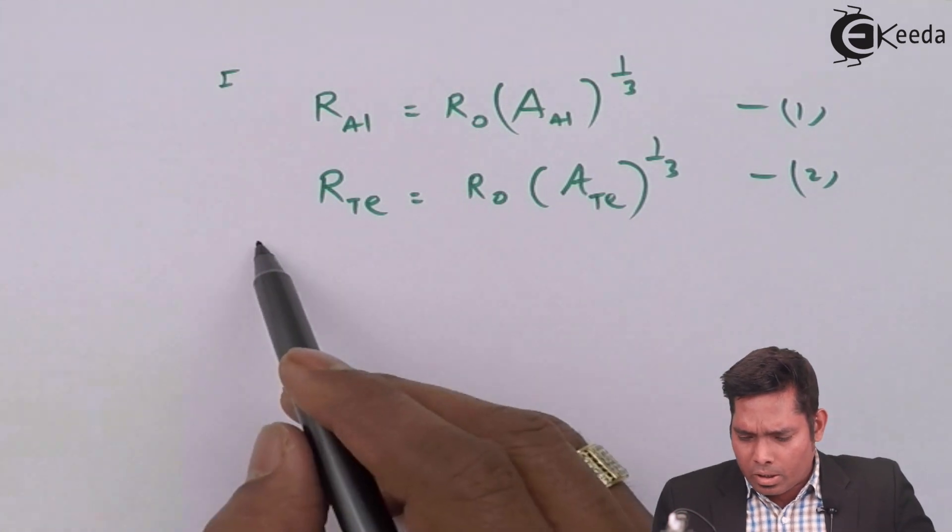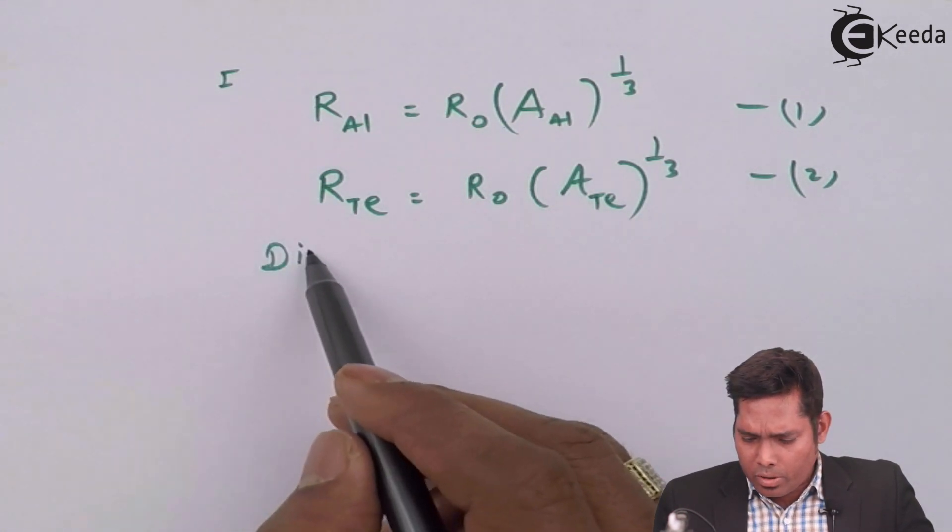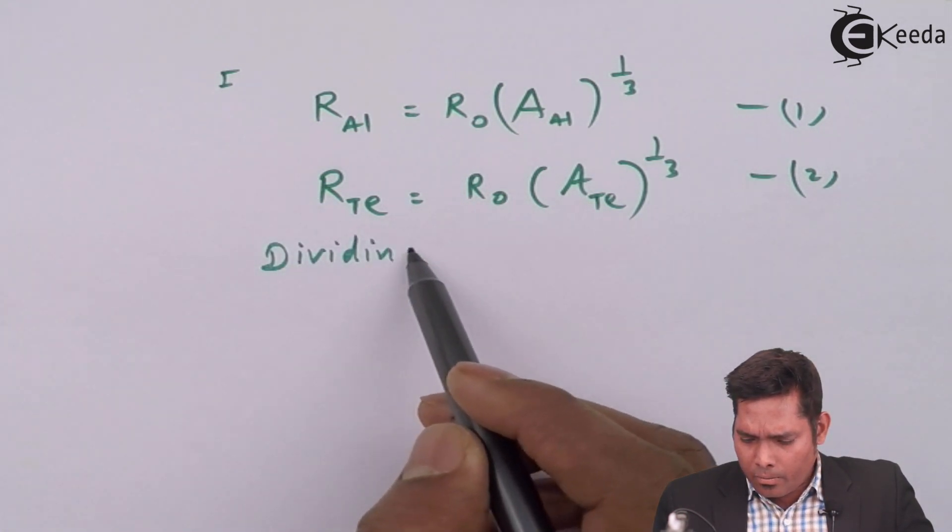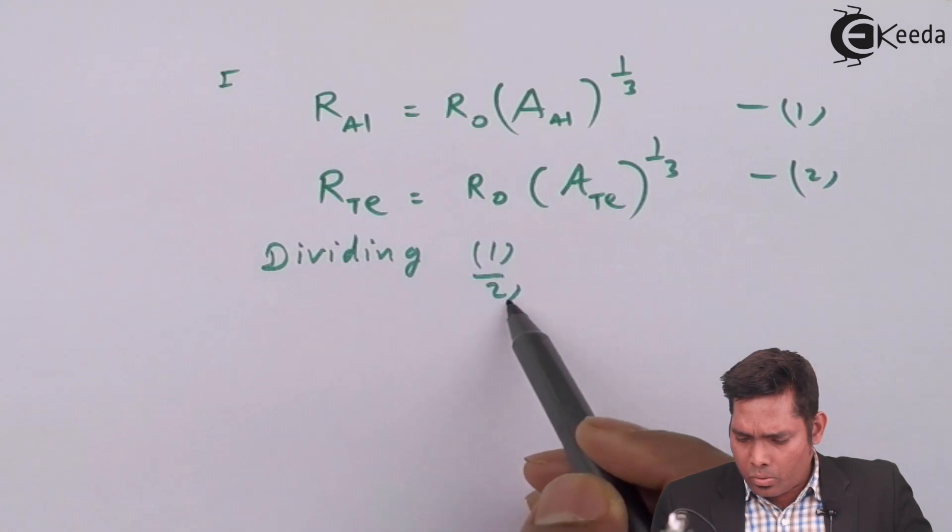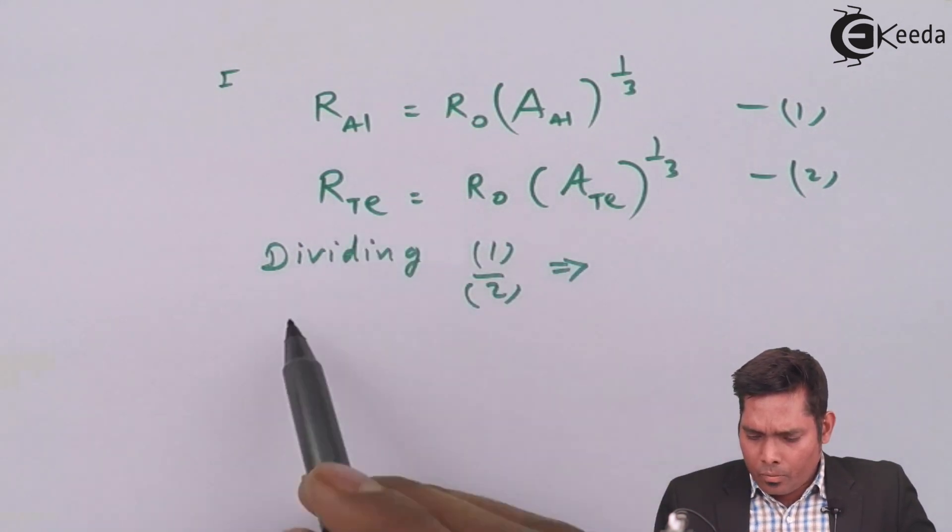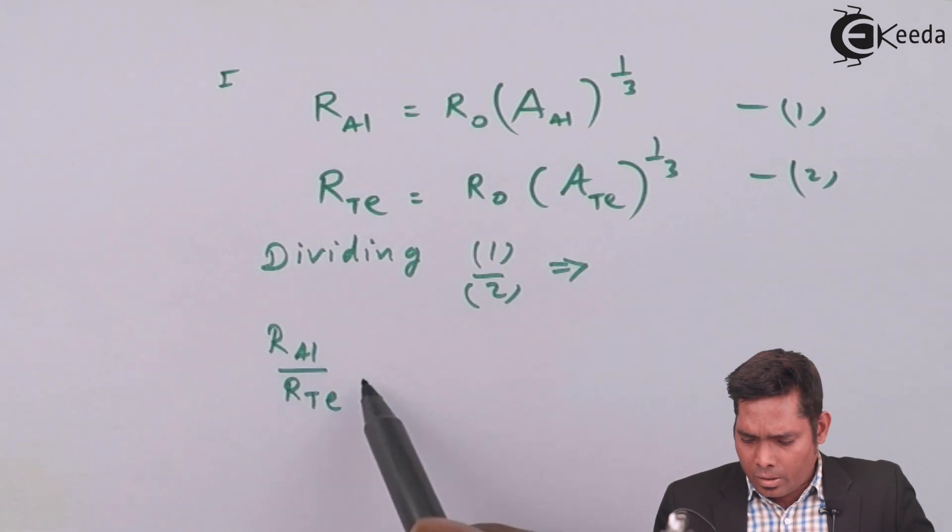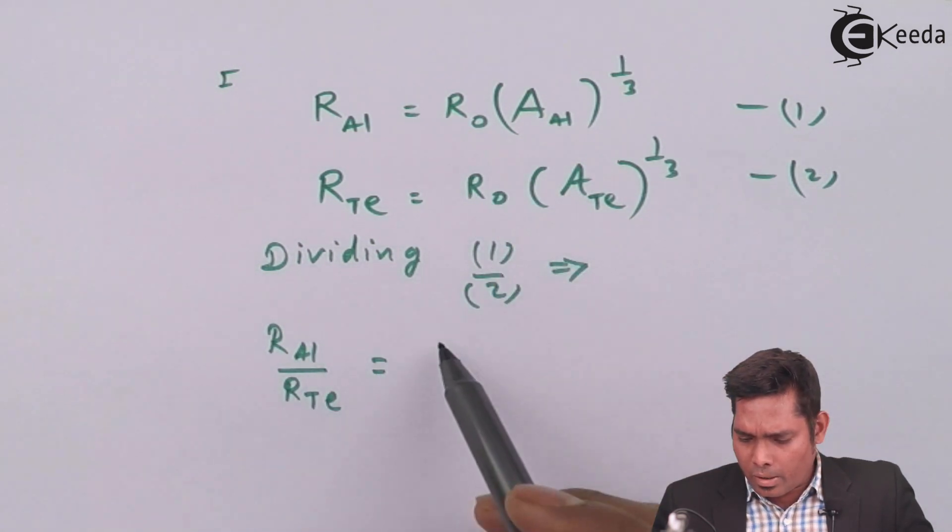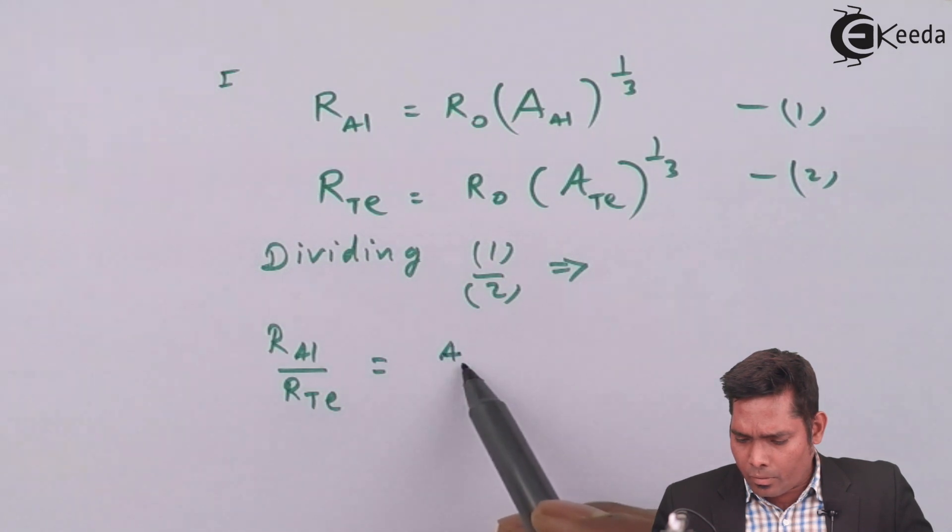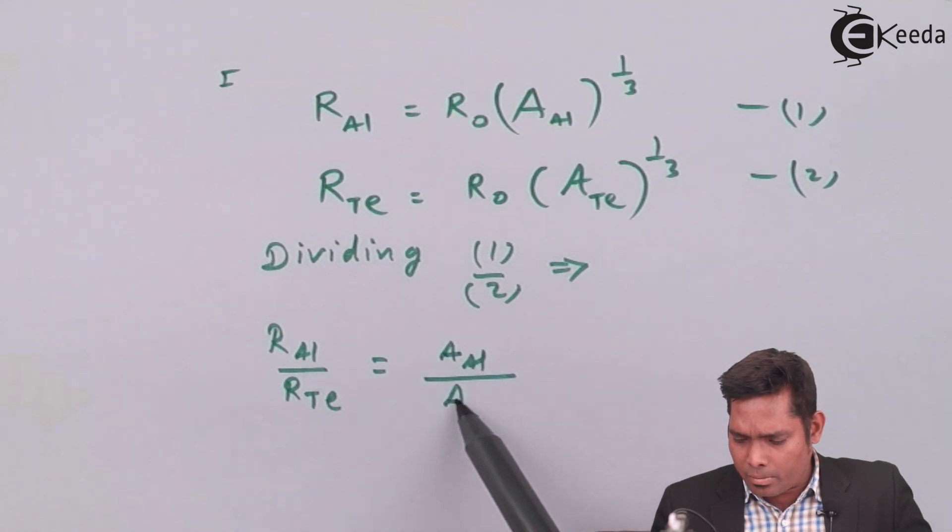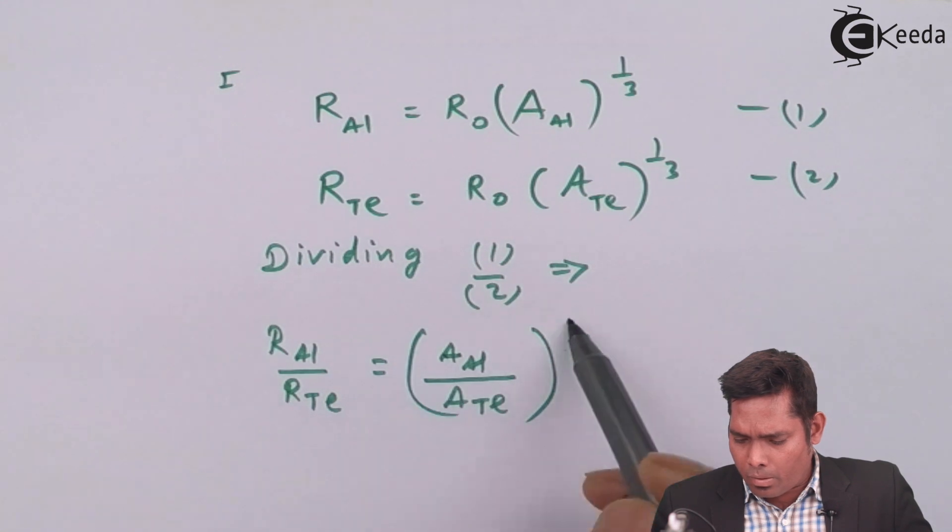If I divide these two equations, dividing one by two, I have R_AL over R_Te equals to, this will cancel out, mass number of aluminum by mass number of Te to the power one by three.